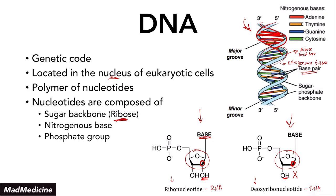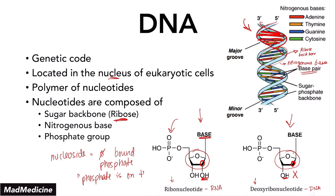Finally, in nucleotides, you have a phosphate group that is bound to the ribose sugar. In a nucleoside — a very important key differentiating factor — there is no bound phosphate. Essentially, the phosphate is on the side of a nucleoside.